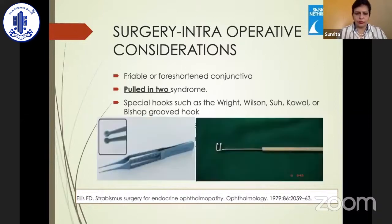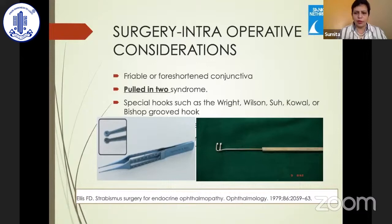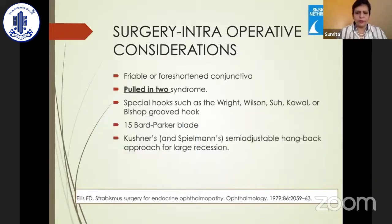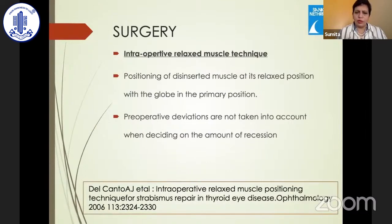A Fechner forceps can be used to hold the conjunctiva, because it really tends to cut through. A double pass is sometimes important when doing recessions, as it creates space between the muscle and sclera to insert scissors. The intraoperative relaxed muscle technique proposed by Del Monte has been very useful: once the muscle is disinserted, it is allowed to slip back as far as possible on the globe with the globe held in primary position. This has proved surgically more successful than traditional recessions.